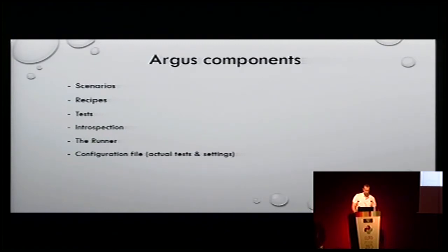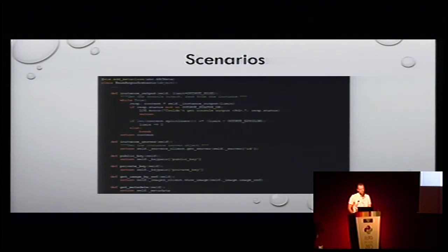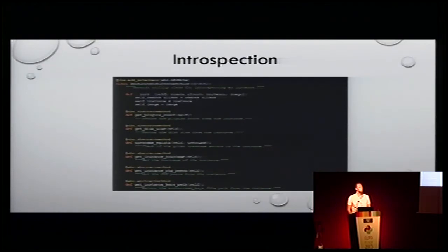Looking at a scenario — it's just some base code and abstract methods. You don't have to customize this object; you can use the already created one, or if you want to do different things you can inherit from it and create your own custom things. This is how a recipe looks. The introspection module gathers the details from the instance.